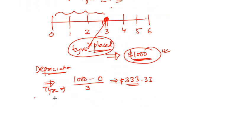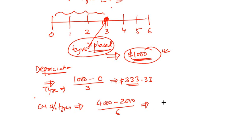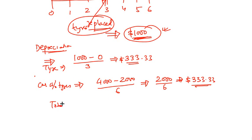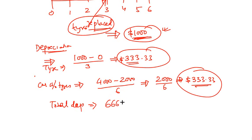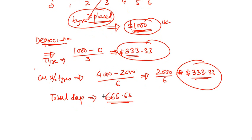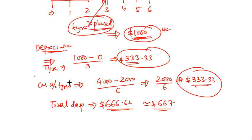The depreciation of car without tires: cost is $4,000, salvage value $2,000, life is six years, so depreciation = $2,000 divided by 6 = $333.33 per year. Total depreciation is tire depreciation plus car-without-tires depreciation: $333.33 + $333.33 = $666.67, roughly $667 per year.